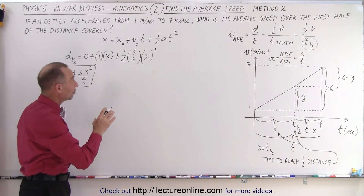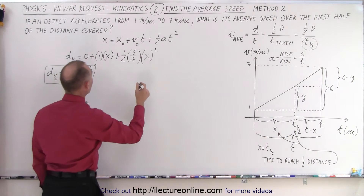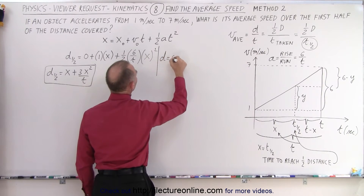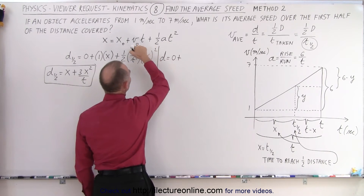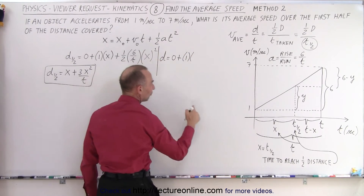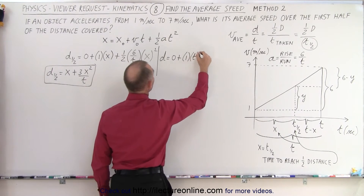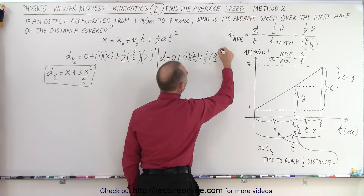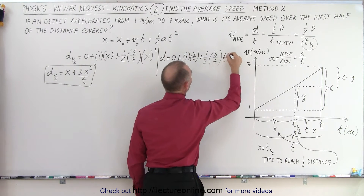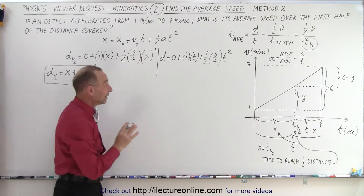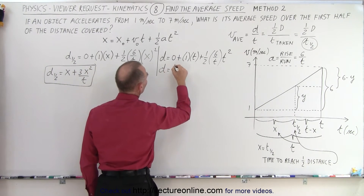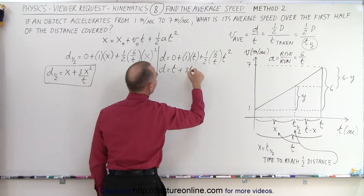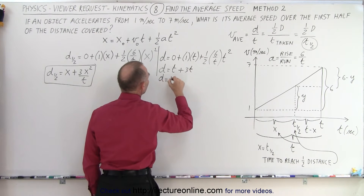Now we apply the same equation to calculate the total distance traveled. Total distance equals zero plus one meter per second times T, plus one-half times 6/T times T squared. Simplifying: D equals T plus 3T, which gives us a total distance equal to 4T.